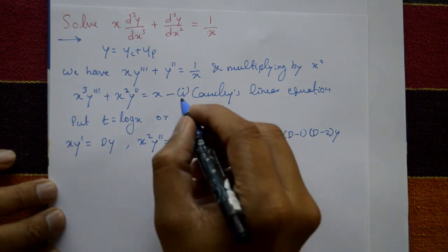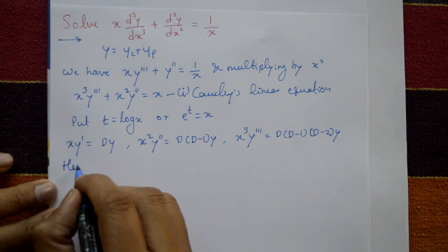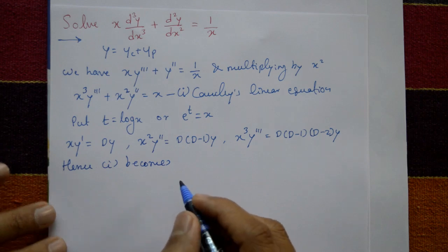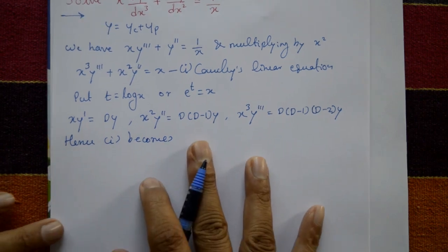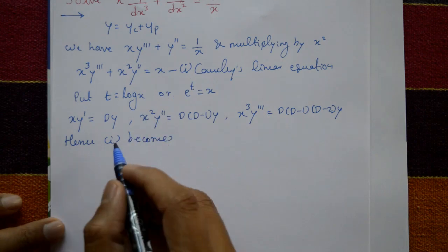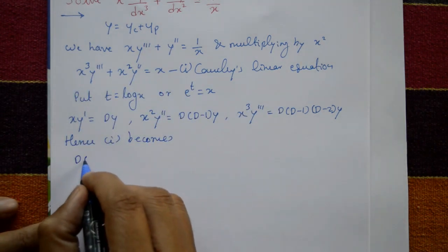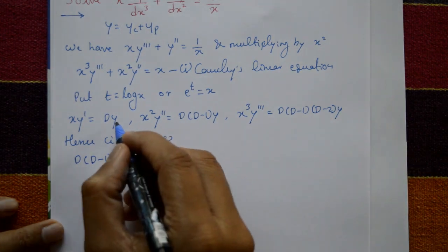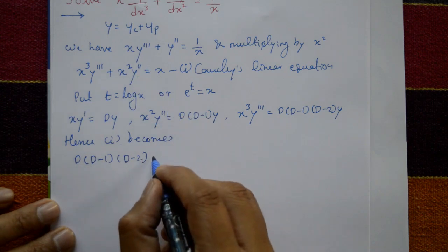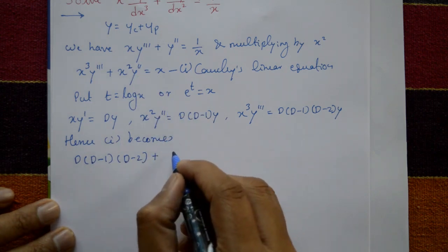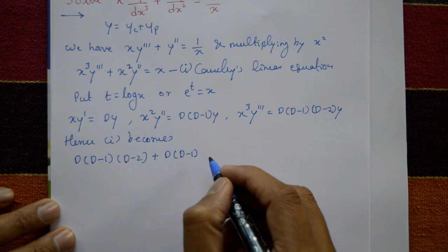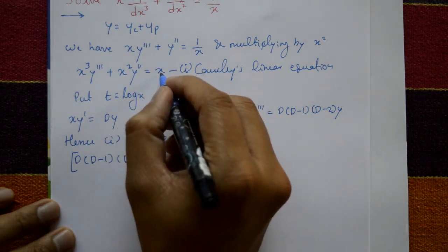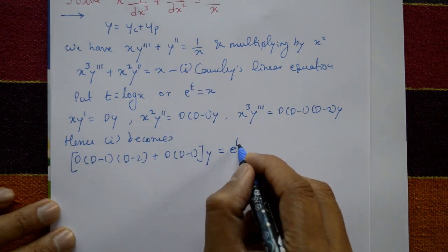Equation one becomes: D(D−1)(D−2)·y + D(D−1)·y = e^t. Here x³y''' becomes D(D−1)(D−2)·y and x²y'' becomes D(D−1)·y, and the right-hand side x = e^t.